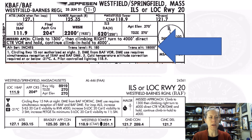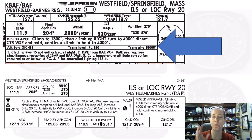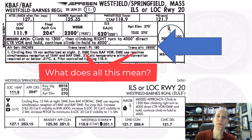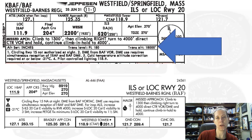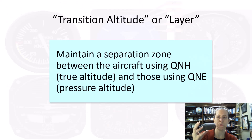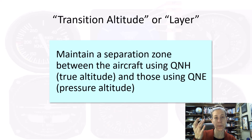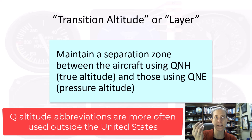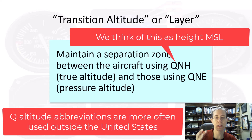So that trans level, trans altitude — what does that even mean? We want to establish a boundary layer, like a separation zone, between aircraft using what we call true altitude — sometimes thought of as the height above sea level — and those that are using the altimeter settings that give them a pressure altitude.